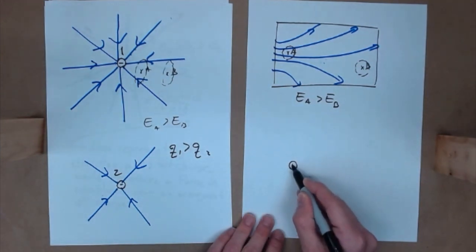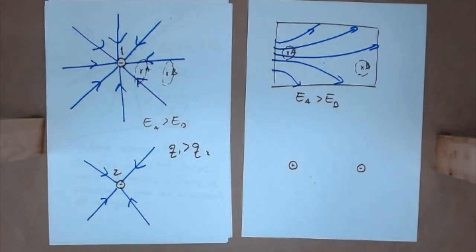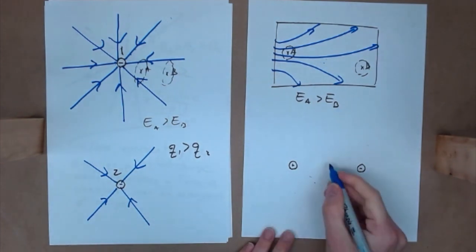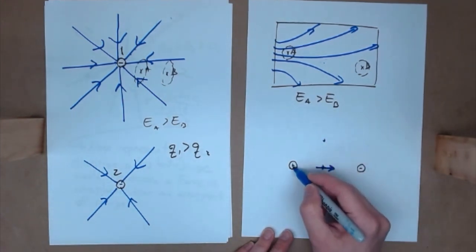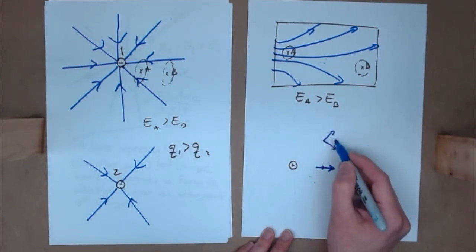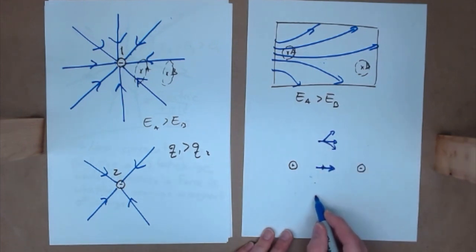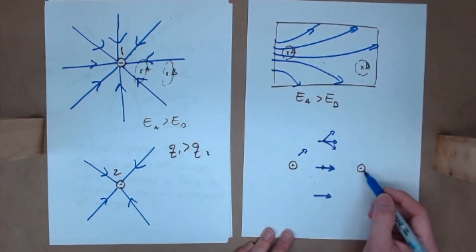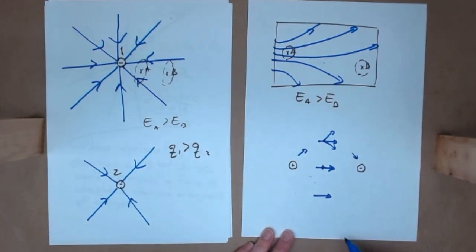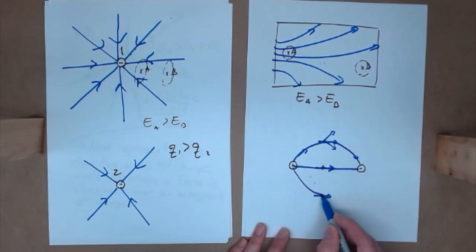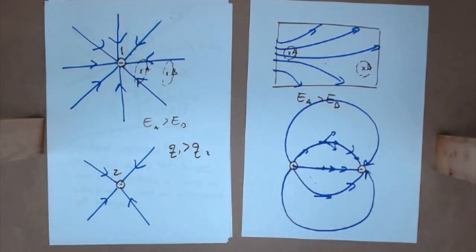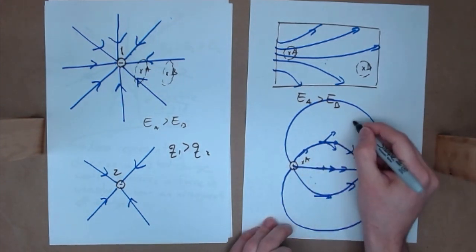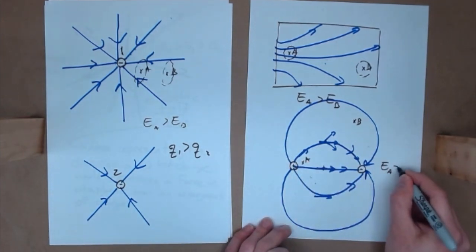For a positive charge and a negative charge of equal magnitude arranged as a dipole: at the center, the positive pushes right and the negative pulls right, so the field points right. Above center, vertical components cancel and we're left with a horizontal-ish component. The field lines form big swooping arcs from positive to negative. At point A, the field is greater than at B because A has more densely packed lines — E_A > E_B.